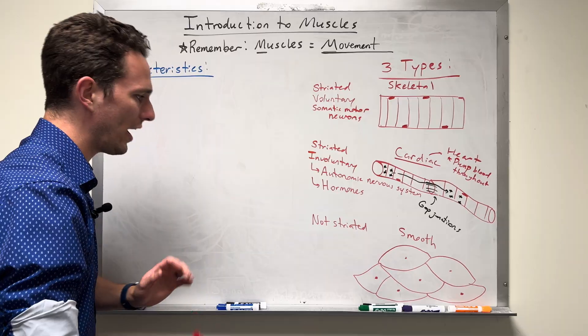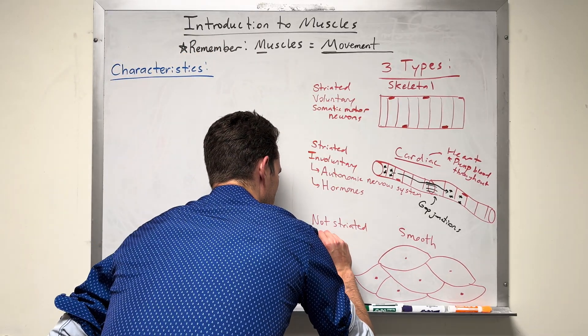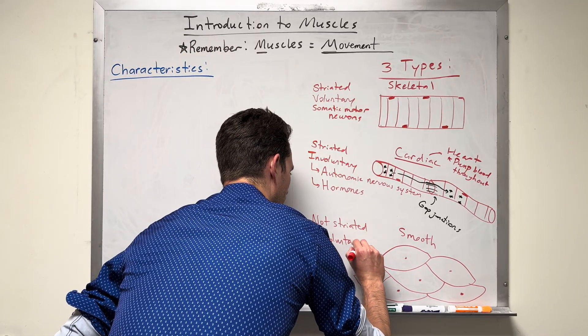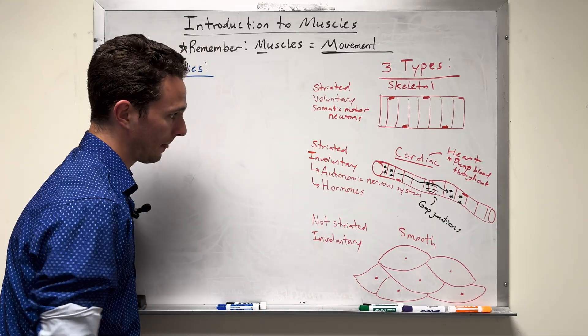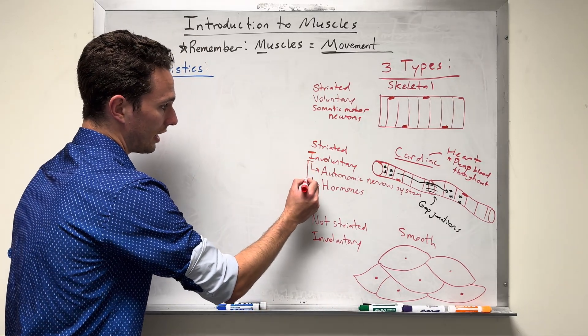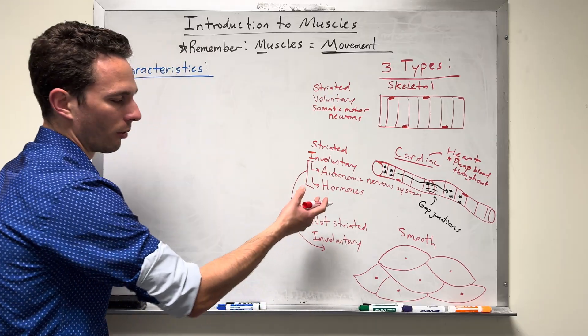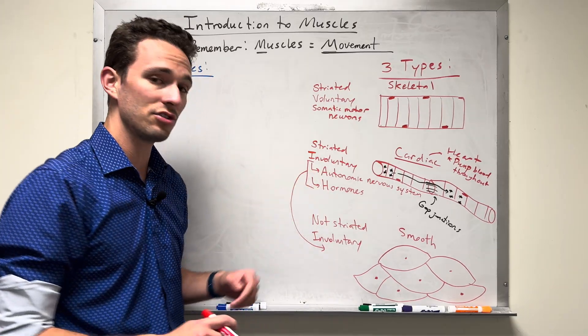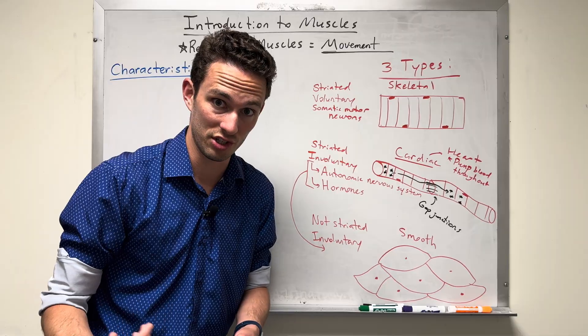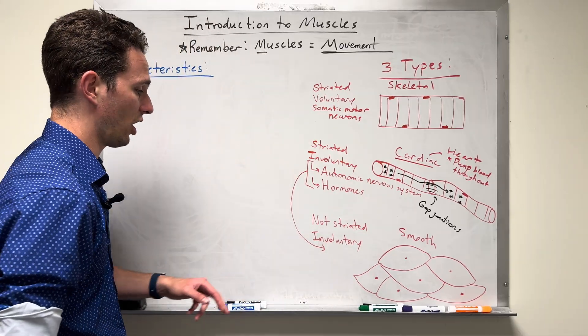But in the same way, we cannot control this. This is involuntary muscle. It's going to be controlled by the same autonomic nervous system and hormones. Probably different hormones, but it's going to be controlled by these two systems, endocrine system and nervous system, specifically autonomic.